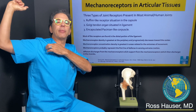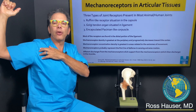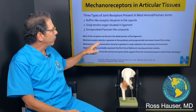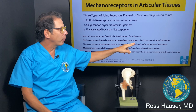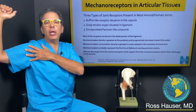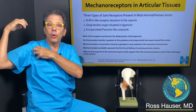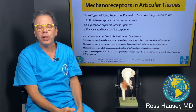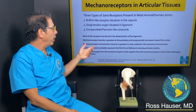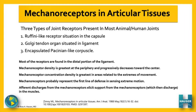When you're at the extreme of motion, the nerve endings fire — essentially saying 'don't go farther, otherwise I'm going to tear and the joint might dislocate.' The mechanoreceptor density is greatest at the periphery and progressively decreases toward the center. This protects the person from extreme range of motion or extreme forces, so they stop applying force before the ligament tears and the joint dislocates.